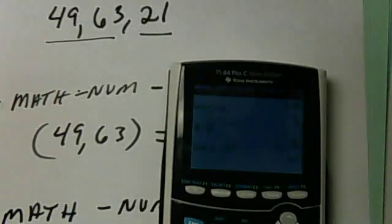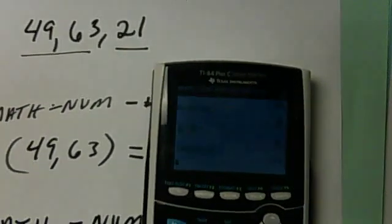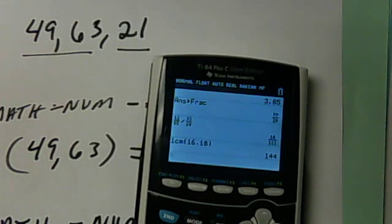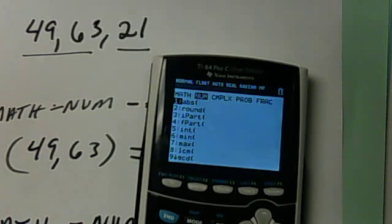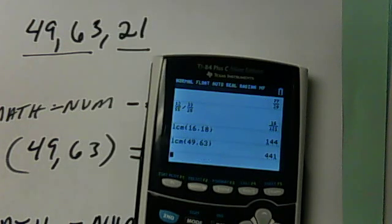You're looking for the factors of 49, 63, and 21. So I'm going to go math. I'm going to go over to num, and then I'm going to hit number 8, and I'm going to put in 49, comma, 63. When I do that, I get the number 441.